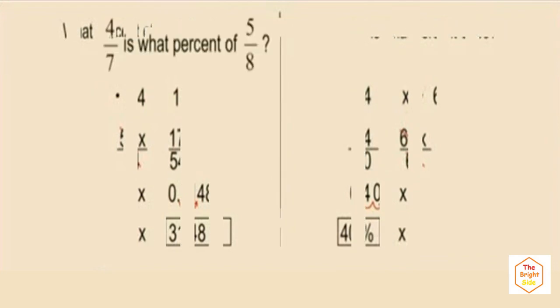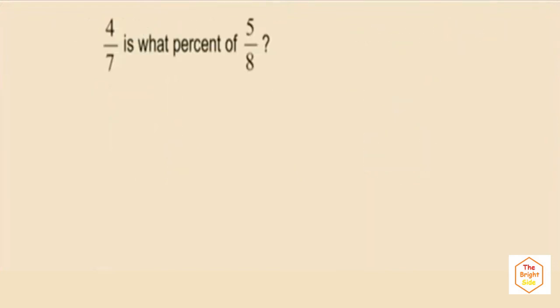Let's do another one. 4 sevenths is what percent of 5 eighths? Now don't get scared. We're going to use the force here. Let's read and translate. Okay, Charlie, pay attention. We have 4 sevenths is, there's our equal sign. What percent? We're going to represent that unknown quantity by the variable x. Of is multiplication, and bring down our 5 eighths. So there's our equation. 4 sevenths equals x times 5 eighths, or 5 eighths times x, or just 5 eighths x.